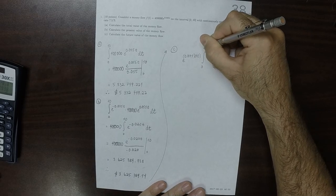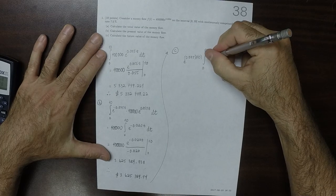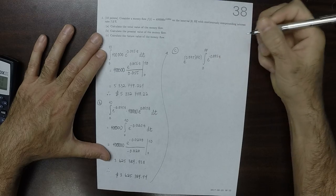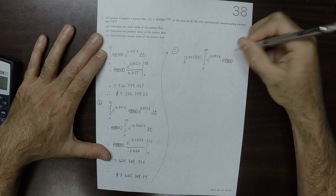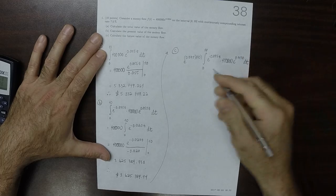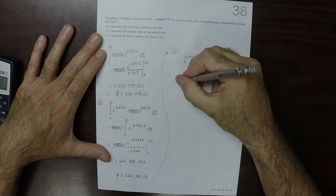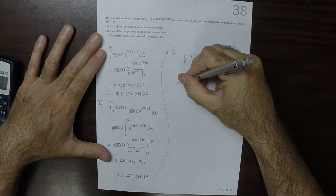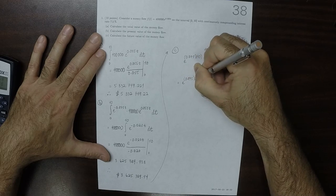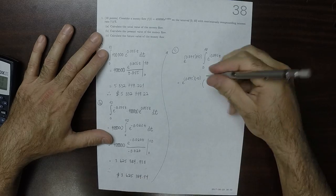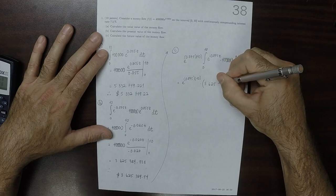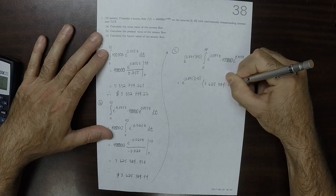And then integral 0 to 10 of exponential negative 0.075 little t, times 400,000 exponential 0.055t dt. Well, this value right here, that's something that we computed in part B. That is to say that the answer is exponential 0.075 times 10, times that number, 3,625,384.938.